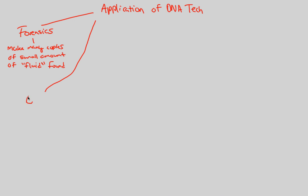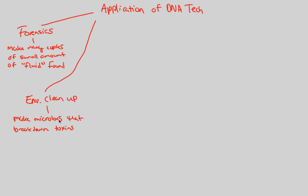You can also utilize DNA technology for environmental cleanup. What you can do is make many microbes — manipulate and create microbes through genetic engineering that break down toxins, things that are toxic to us but that the microbes essentially consume. These engineered microbes go out and break down toxins we don't want in the environment. Of course, this process is expensive and still in early stages of development. But it's very cool to think that DNA technology can be involved in something as important as environmental cleanup.